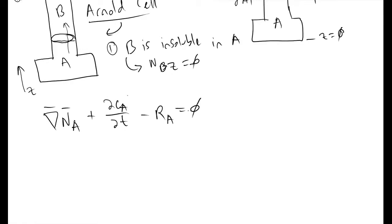With Arnold cells, we will assume the concentration of A is constant over time. We can assume a pseudo steady state hypothesis. And we will also say that there's no reaction occurring. We can say that A and B are inert species. What this tells us is that the divergence of your flux vector is equal to zero.